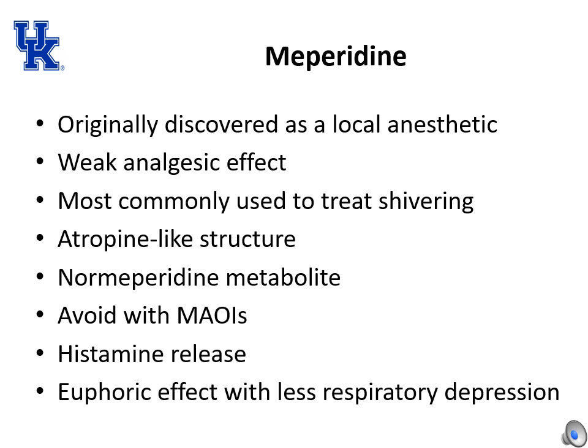Mepiridine, also called Demerol, was originally discovered as a local anesthetic. It is a weak analgesic most commonly used to treat shivering in the post-operative period. Along with its local anesthetic-type structure, it also has an atropine-like structure, giving it anticholinergic properties. It will cause a euphoric effect with less respiratory depression.